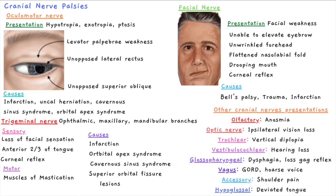The vestibulocochlear nerve lesion causes hearing loss. The glossopharyngeal nerve, cranial nerve 9, leads to dysphagia as well as loss of the gag reflex. The vagus nerve has a wide array of functions but can present with vocal cord palsy and a hoarse voice, as well as GI and respiratory presentations. The accessory nerve is involved in shoulder shrugging, so a lesion causes shoulder weakness. The hypoglossal nerve controls the tongue muscles, so there may be tongue deviation toward the affected side.